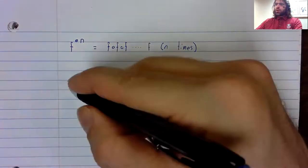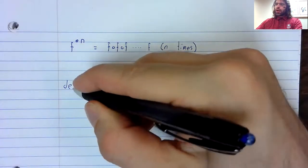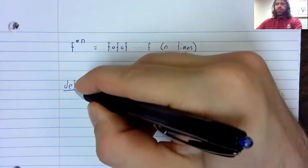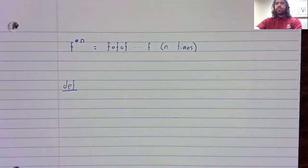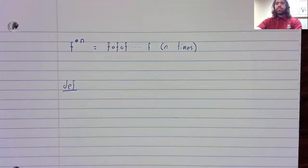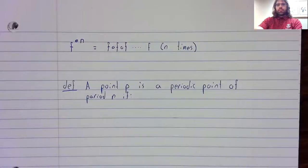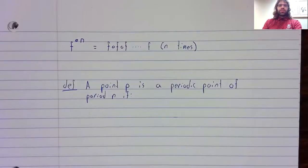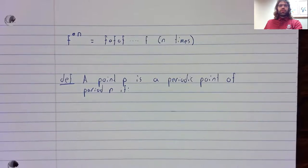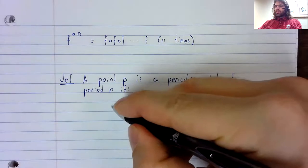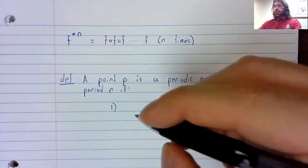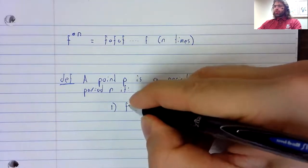And now, our definition. A point P is a periodic point of period n if two conditions are satisfied. First of all,